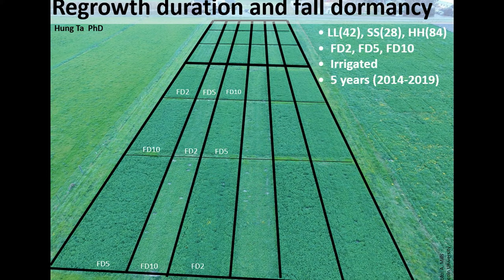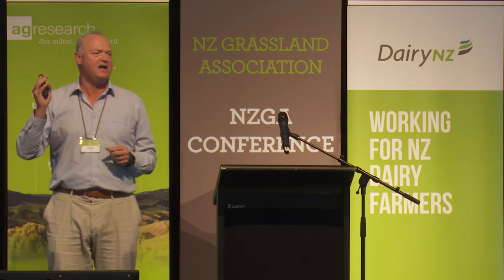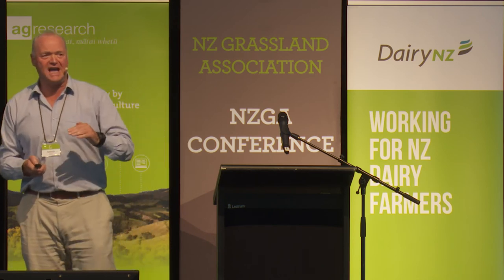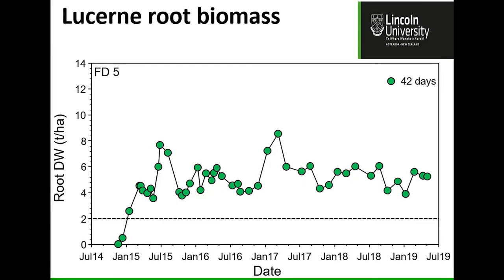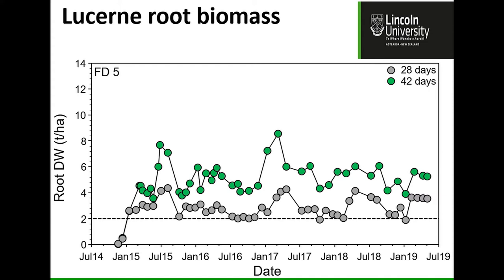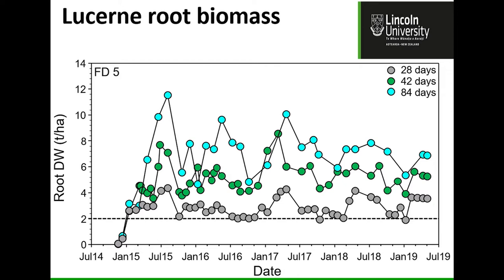We wanted to see what would happen if we defoliated our crop like a bad manager or left it a really long time to regenerate. We had three treatments — 28-day, 42-day, and 84-day defoliation intervals — across three different genetics, irrigated with no water or nitrogen stress. We found a clear seasonal up-and-down pattern over five years. When we defoliate too frequently, we have less root reserves — a carbon deficiency. The dotted line represents two tons of biomass, which is the structural biomass; when we hit that line there are no reserves left. But if I leave my plant for a long time, I can get up to 10 tons of biomass below ground. This is simply what grazing management does to your underground reserves.